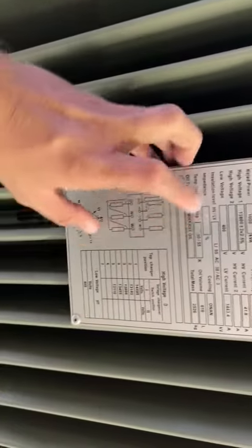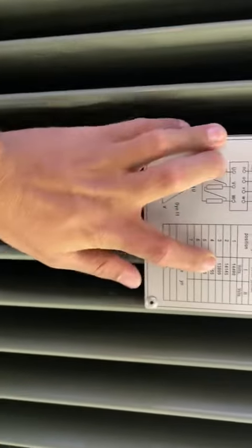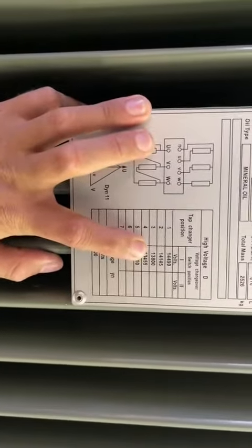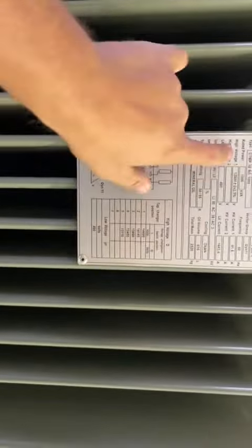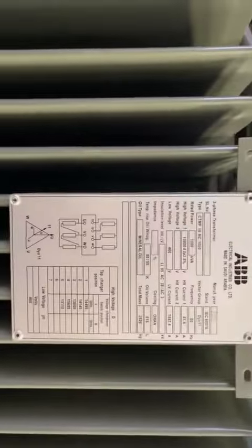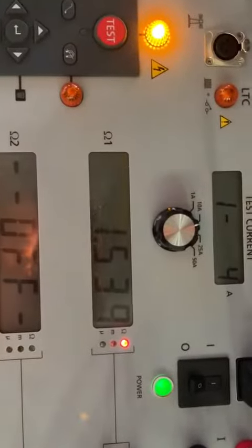Here we are doing tap 3. Let me see, this is tap 3. Here, see there is tap 3, 13800. This is our HV (high voltage). Now the result is